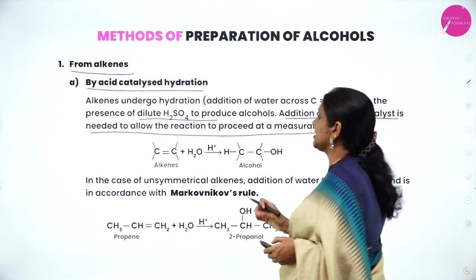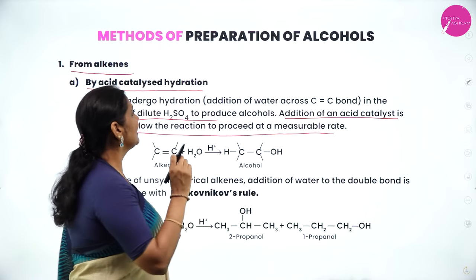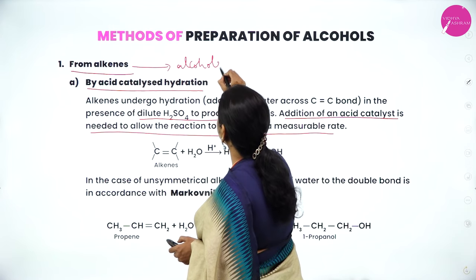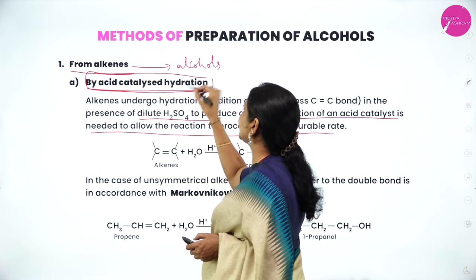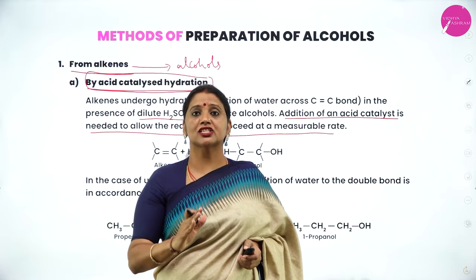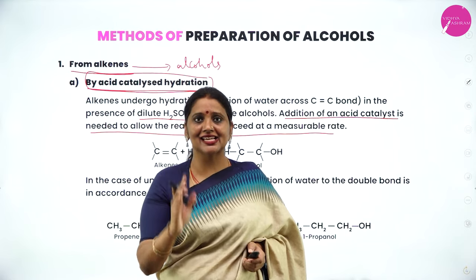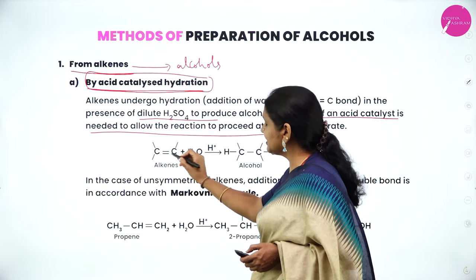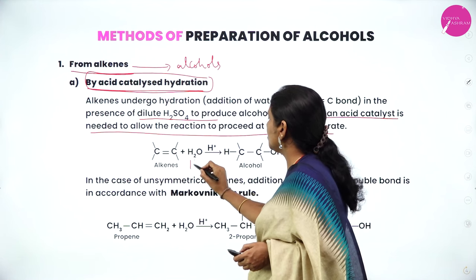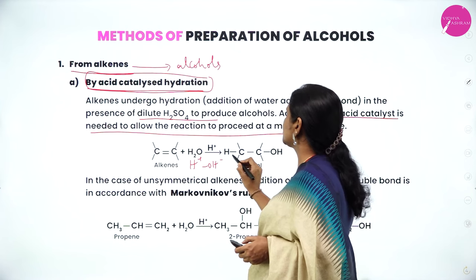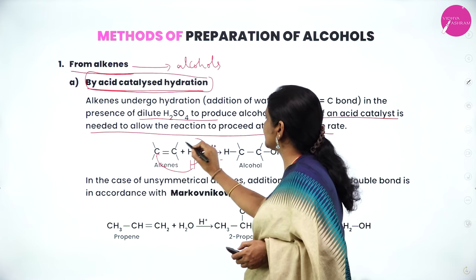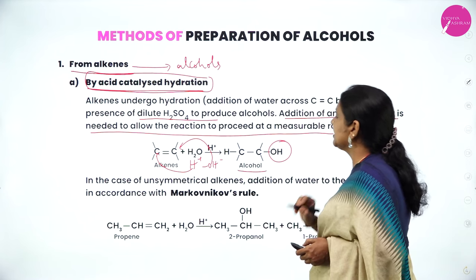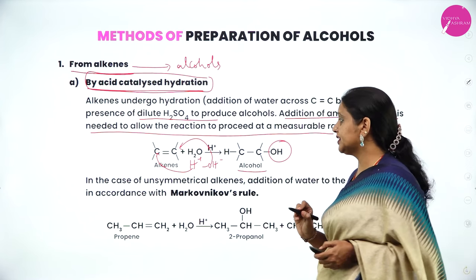Dilute sulfuric acid makes the reaction proceed at a measurable rate. Alkenes react with water in the presence of dilute sulfuric acid as a catalyst to produce alcohols. When we consider the carbon skeleton of alkenes — C double bond C — water gives H⁺ and OH⁻. One H⁺ goes to one carbon, and OH⁻ goes to the other carbon, so the OH group is introduced into the carbon skeleton and it is converted into alcohol.